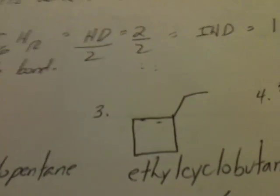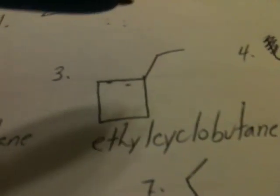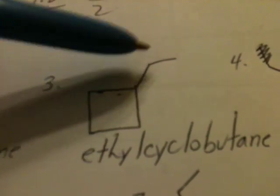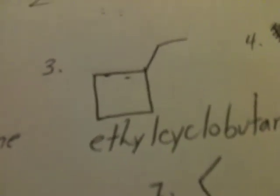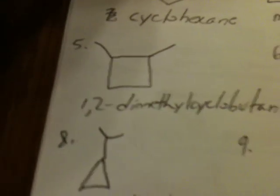So now we're going to move down to cyclobutanes. So that leaves 2 carbon atoms free. Therefore, we can draw ethylcyclobutane. Then we can draw 1,1-dimethylcyclobutane and 1,2-dimethylcyclobutane.